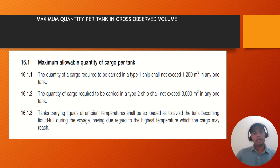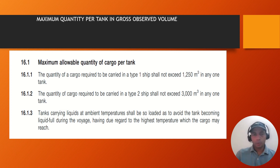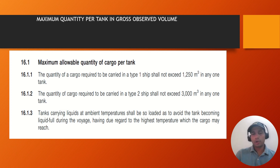The maximum quantity allowable per cargo tank is very important whenever you are planning the cargo stowage or responding to a charter query. When making the cargo plan or stowage plan, remember that it should not exceed 1,250 cubic meters in any one cargo tank for type 1. If your ship is sailing on type 2, the maximum cargo in any given tank should not exceed 3,000 gross observed volume (GOV). For type 3, there are no restrictions — you can carry more than 3,000. We will cover 2K in the next few slides.